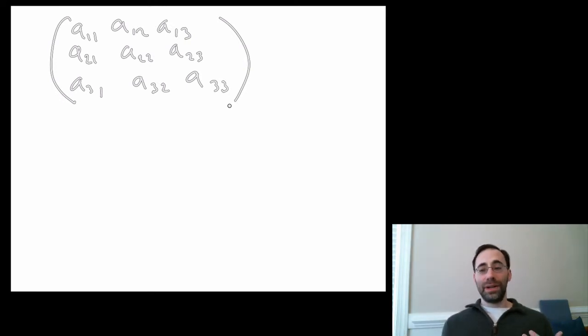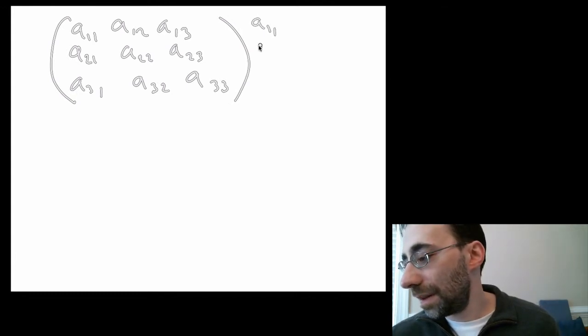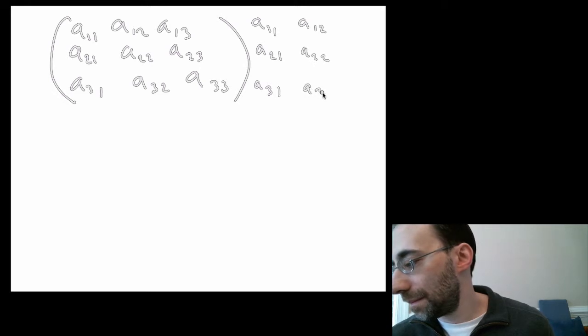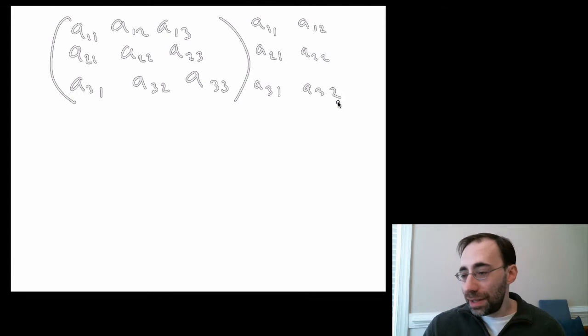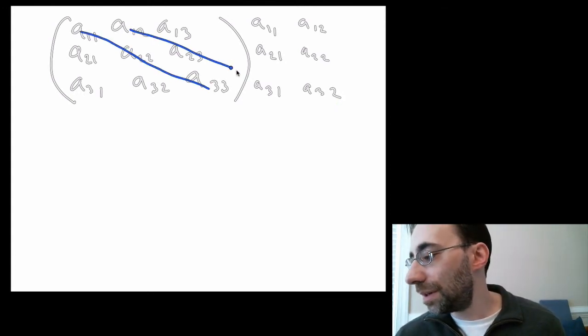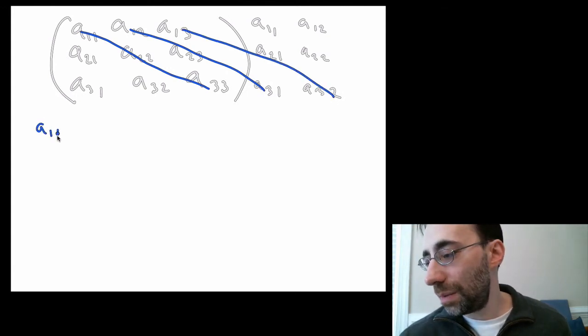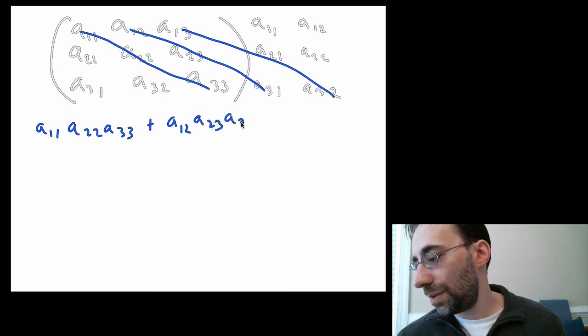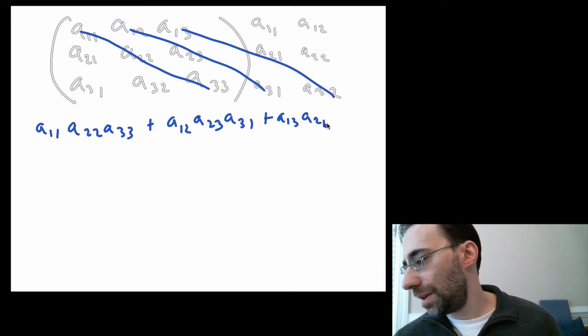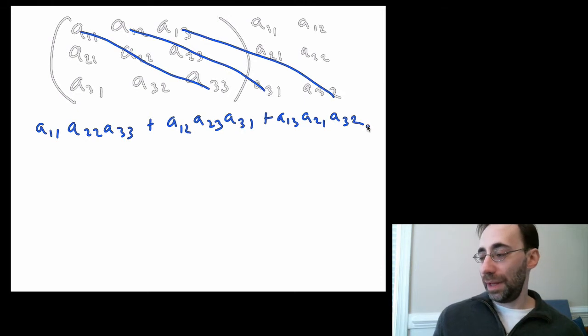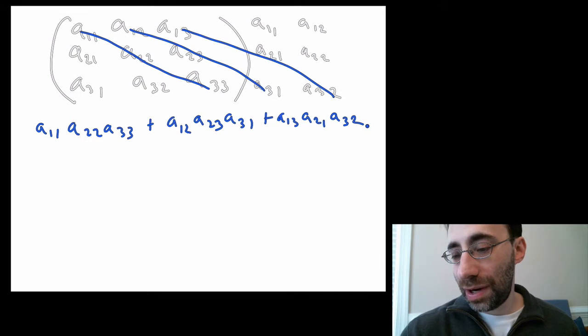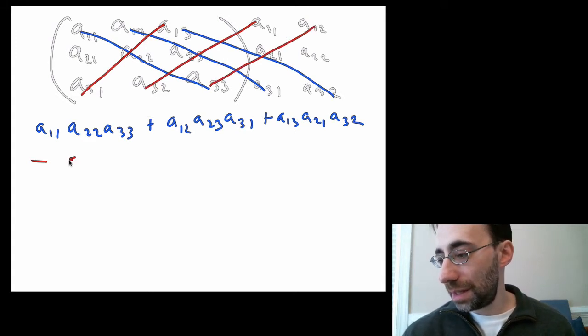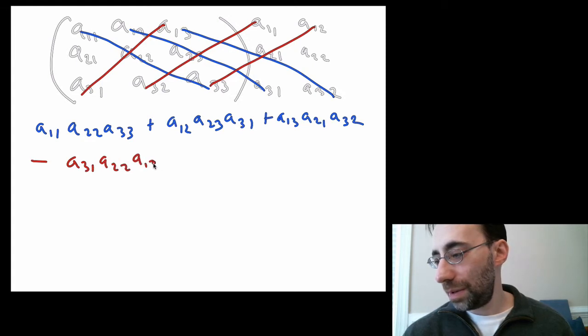Now, if you want to get the determinant of this thing, one convenient way of doing this is to first kind of repeat these last two rows over here, and first do the blue ones. So, this blue one, this blue one, and this blue one give you the pluses. So, this means it's A11, A22, A33, plus A12, A23, A31, plus A13, A21, A32.